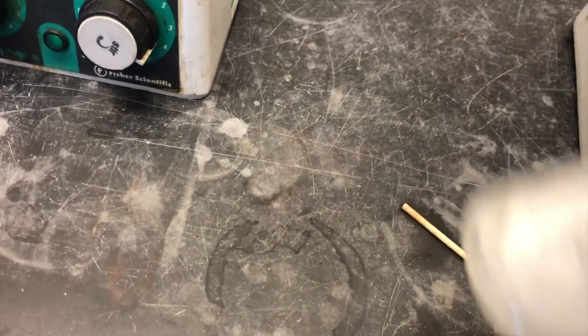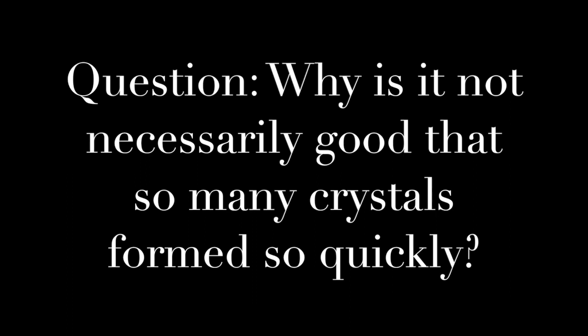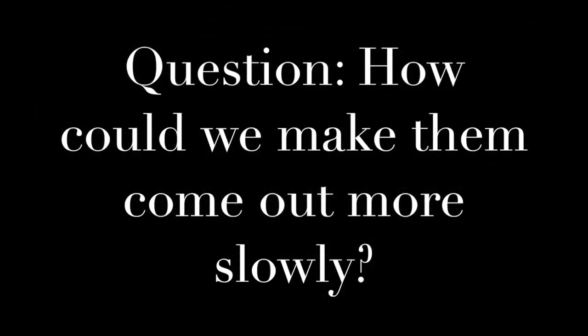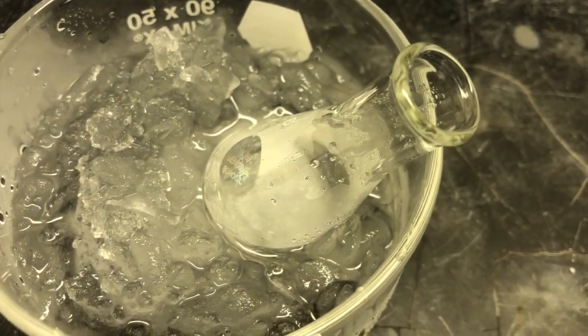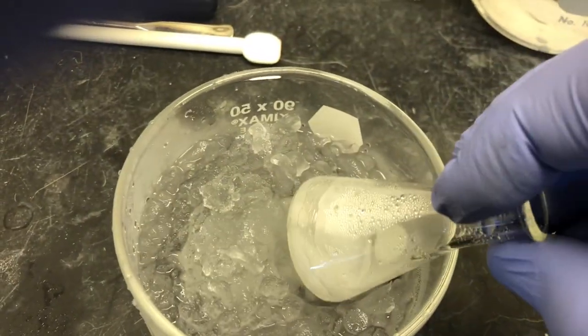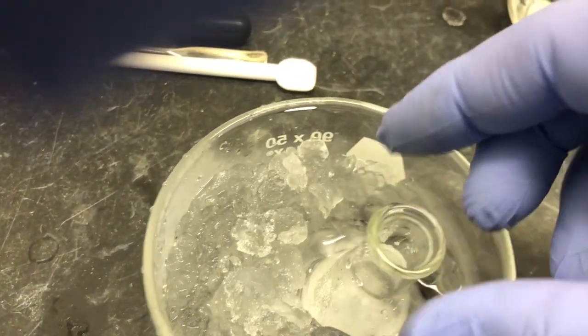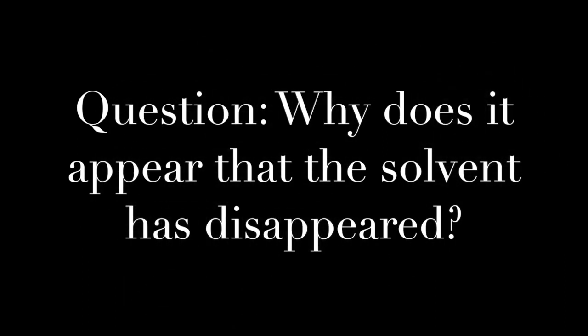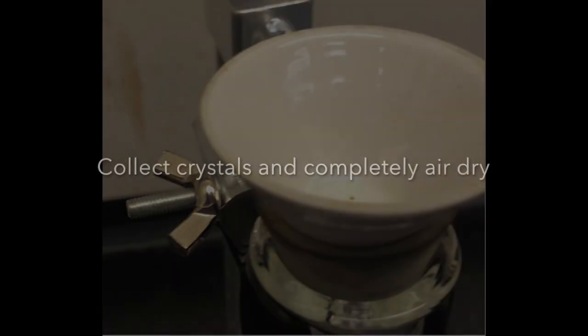We continue to let the solution cool and crystallize on the bench top, and once it is close to room temperature we can then place it in the ice bath. Once in the ice bath the crystals will continue to form and we will be able to maximize our yield by lowering the temperature of the solution. You can see how many crystals have formed in the solution at this point. We collect the crystals by vacuum filtration, just as with the crude product, and then let the crystals thoroughly dry before going on to the next step.